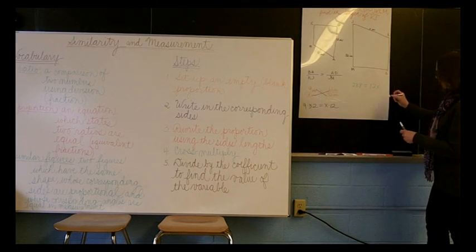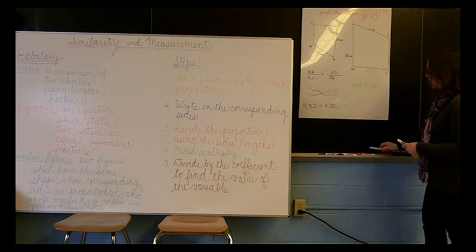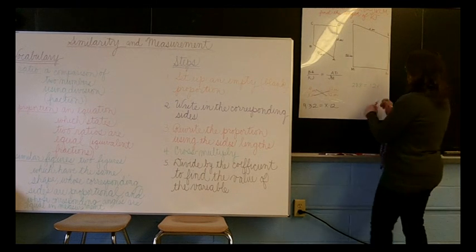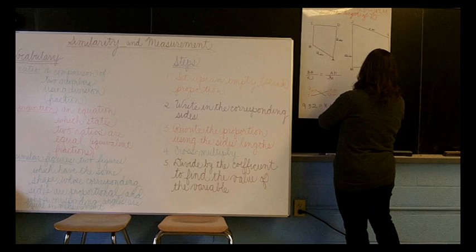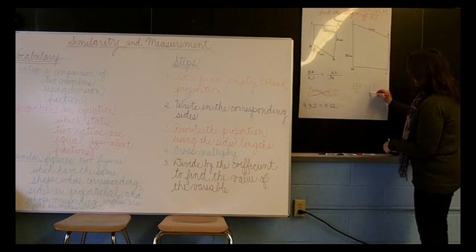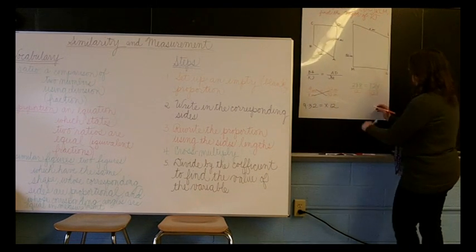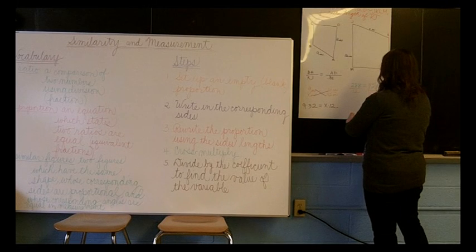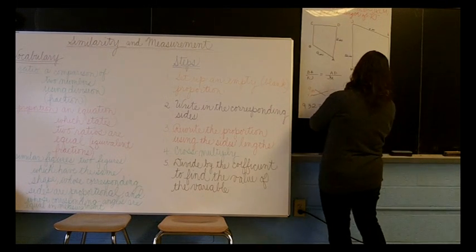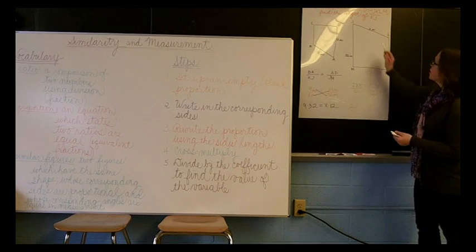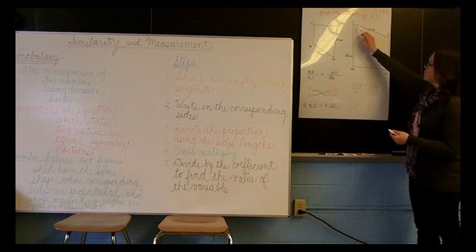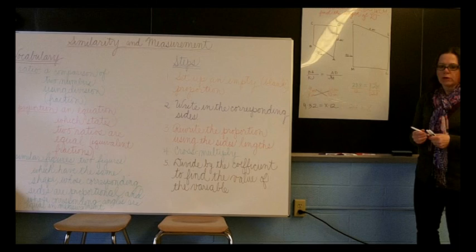Now remember, we need to find out what X is. So to do that, we have to divide by the coefficient. So we'll divide both sides by 12. So now we have a coefficient of 1, which means that X equals 24 inches. So this side, side KJ, is 24 inches long.